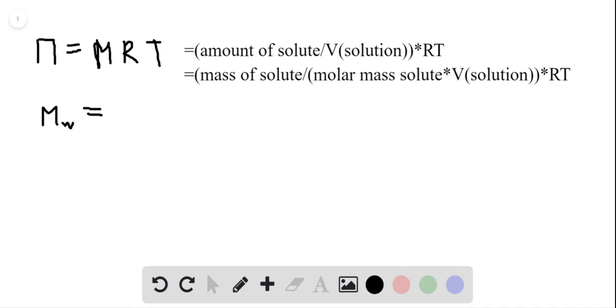It will equal to mass of our protein, mass times universal gas constant and temperature, divided by the osmotic pressure times the volume of solution.